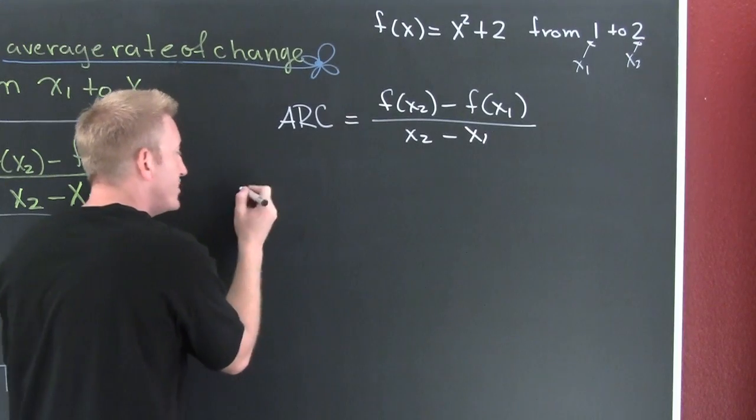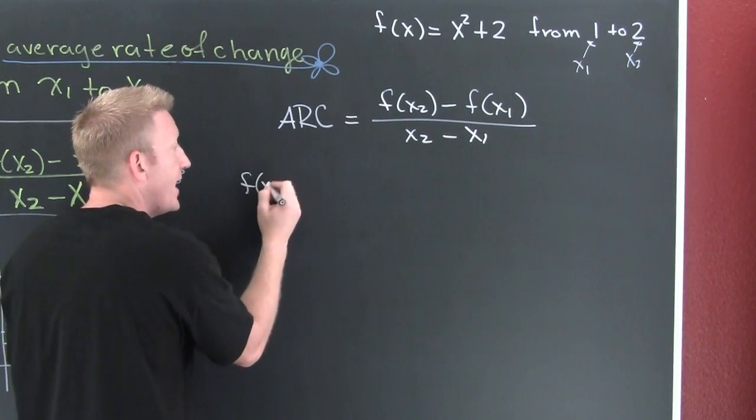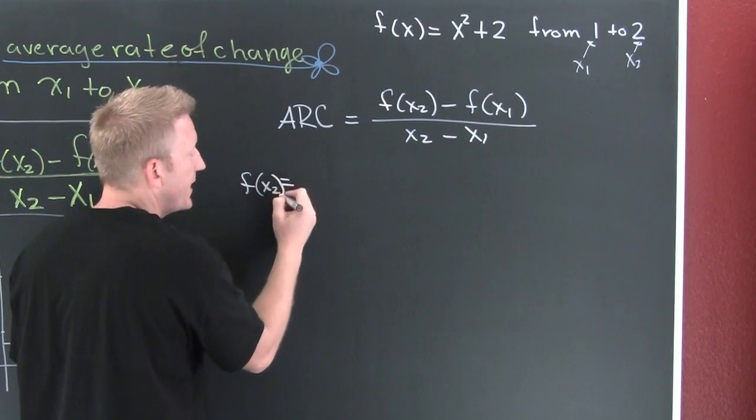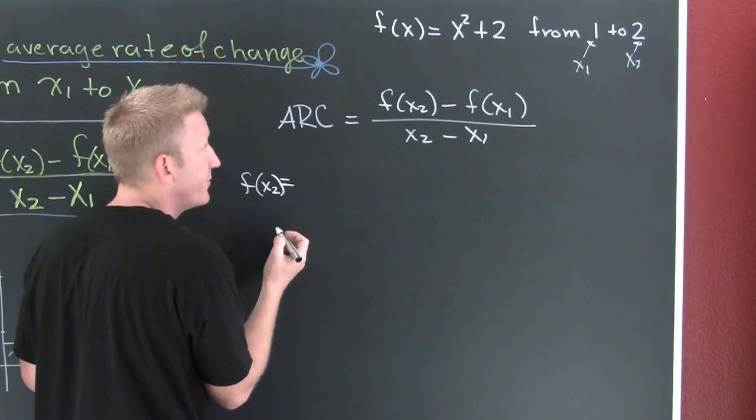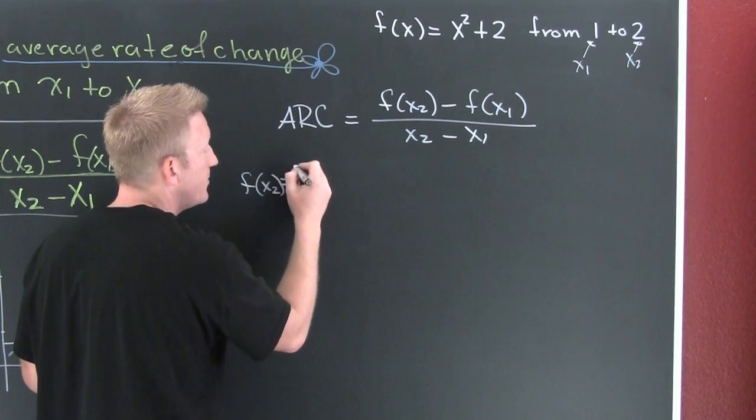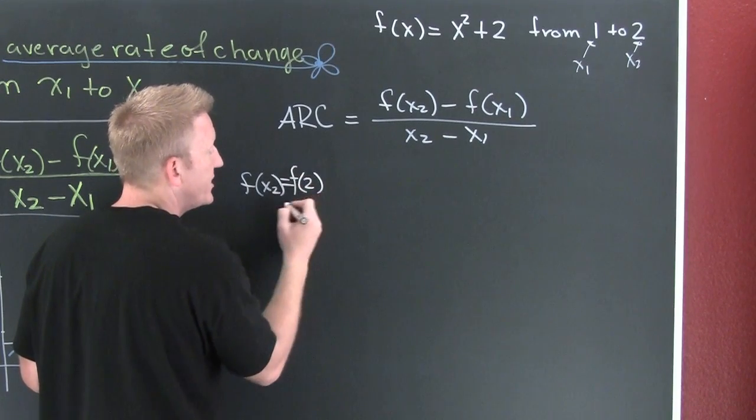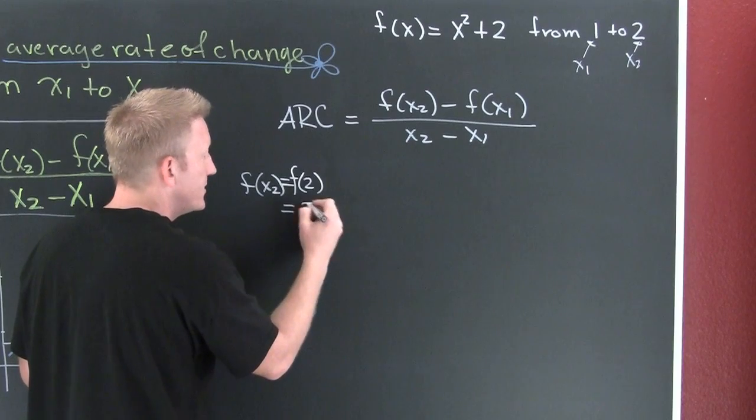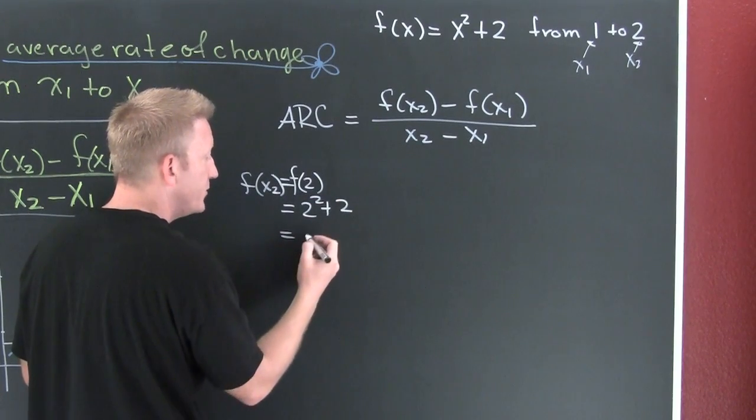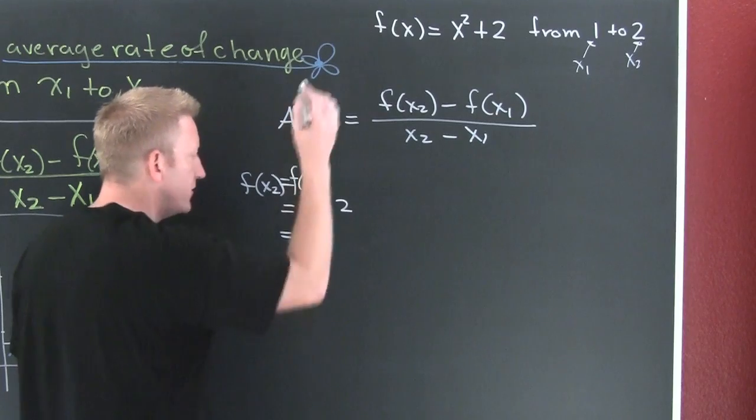But what I suggest for you is to find f of x2. If I see an x in f, I'm gonna put a 2. So then this is gonna be f of 2, which is 2 squared plus 2, which is 4 plus 2 is 6. Very nice.